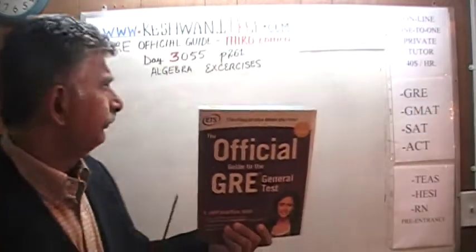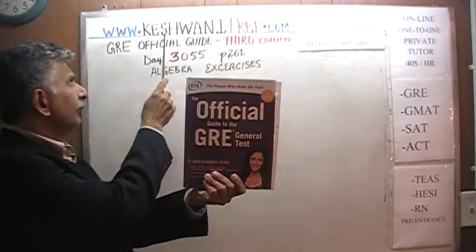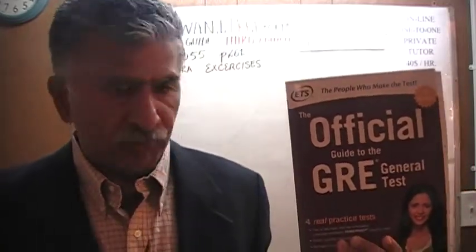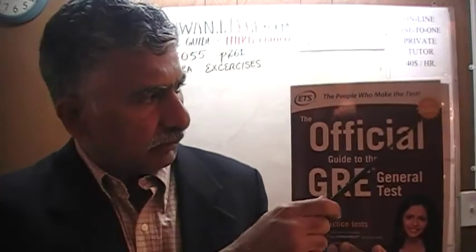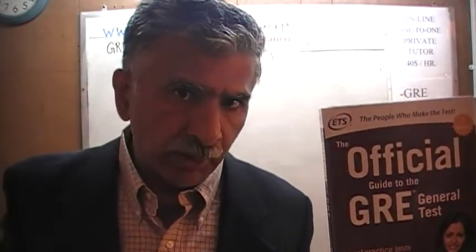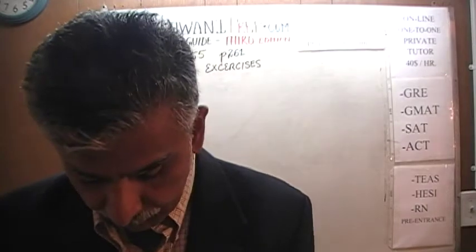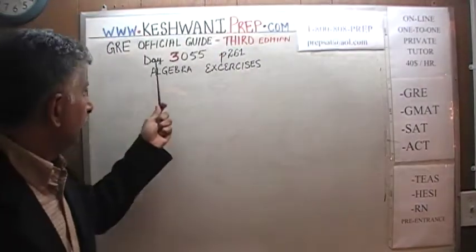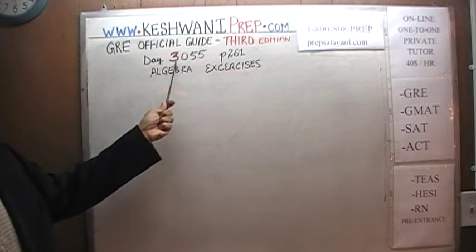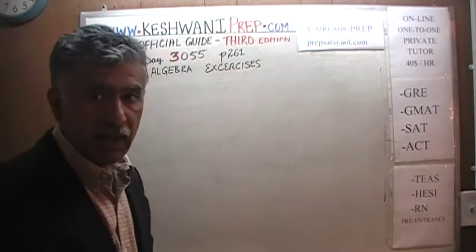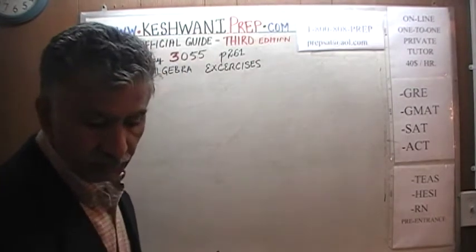Hello, my name is Keshwani — K-E-S-H-W-A-N-I. We are here because we want to prepare for the GRE. We have been solving math problems out of this book, the Official Guide to the GRE, third edition. If you do not own this book already, purchase it immediately — you're going to need it. Today is our lesson number 55, Day 3055. The '3' indicates we are in the third edition. We are on page 261 where we have some algebra exercises.